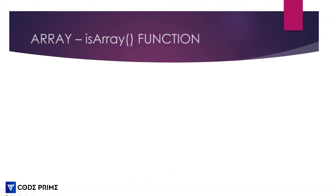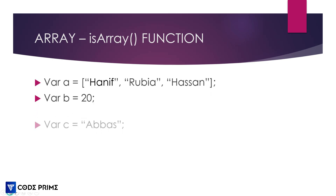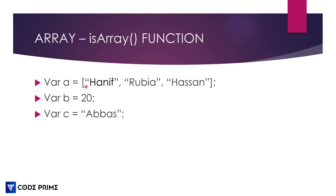Now let's try to understand the Array.isArray() function method. I have taken three variables: variable a, b, and c. Variable a is an array element, variable b is an integer — a number — and variable c is a string. Normally we can see what each data type is, but when we use the isArray function method in JavaScript, it can analyze and tell us which is an array and which is not.